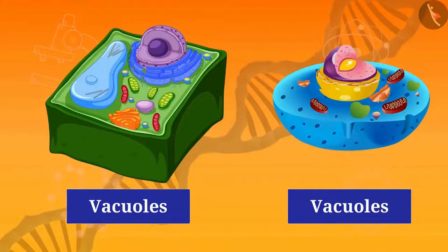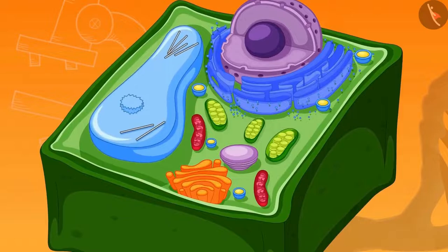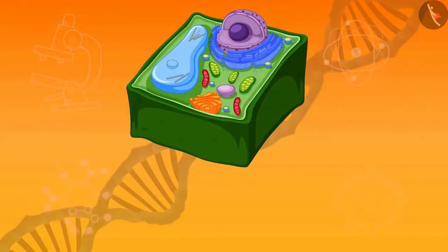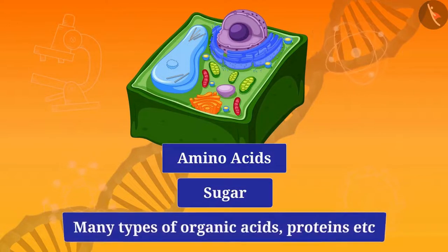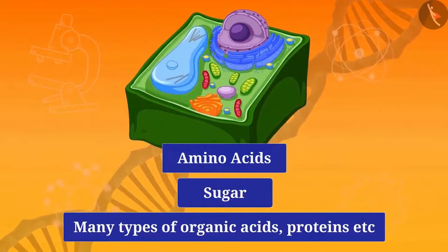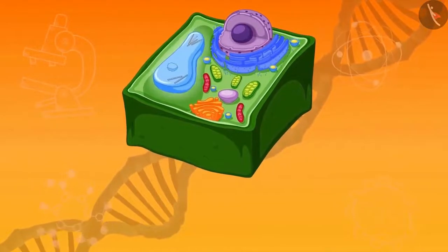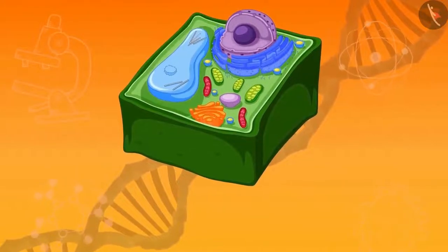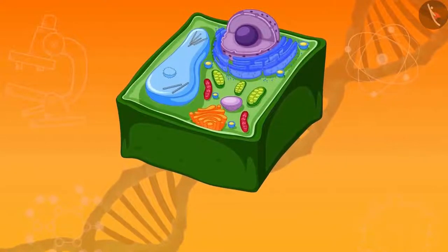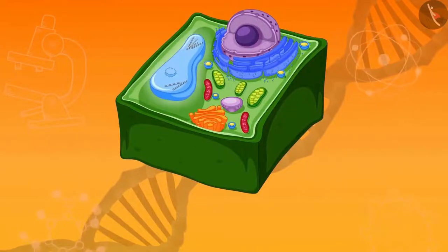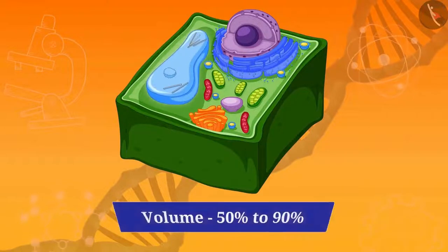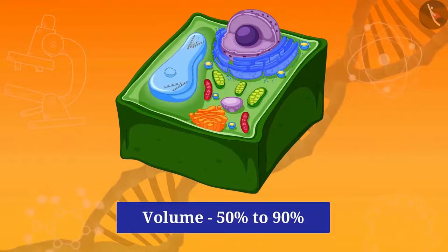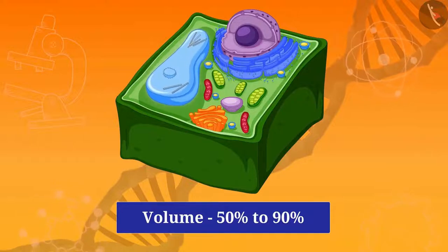Now we will know about vacuoles. All necessary substances are stored in the vacuoles of the cell. A vacuole is a collector of liquids and solid substances such as amino acids, sugars, many types of organic acids, and proteins, which are very essential substances for plants. Their size is small in animal cells, whereas in plant cells vacuoles are very large — in some plant cells their measurement is from 50% to 90% of the volume of the cell, because of which the nucleus is pushed near the plasma membrane.